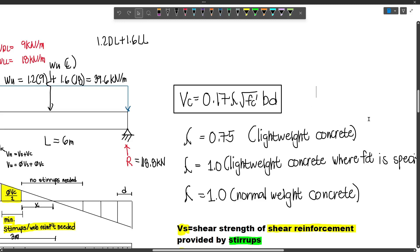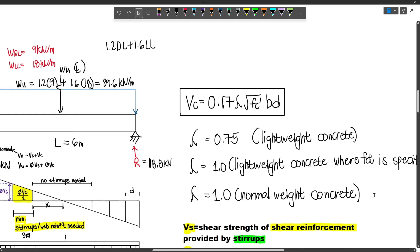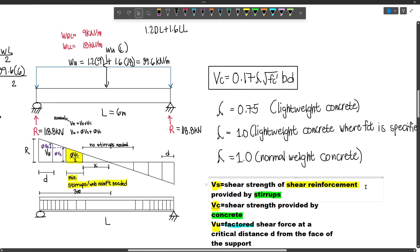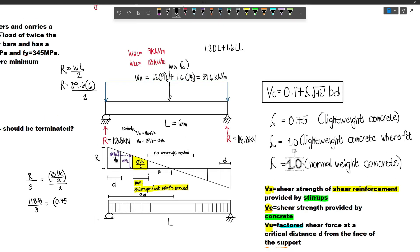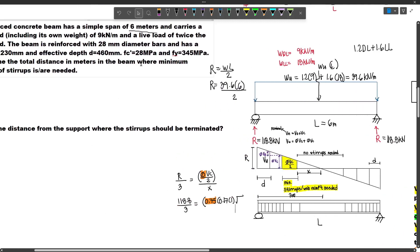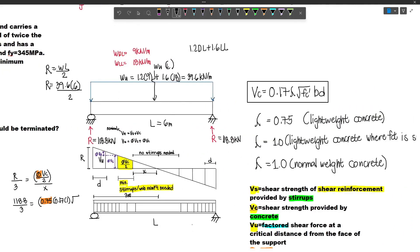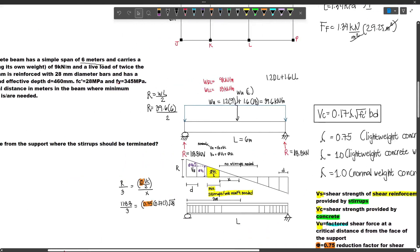Now if lightweight concrete is used, lambda is 0.75. However, usually in board exams and RC items, normal weight concrete is commonly used. In real world applications too, this is what's used. So we use lambda equals 1. Let's try to apply the formula. Phi is 0.75, and our VC is 0.17 lambda which is 1, or we can omit it.